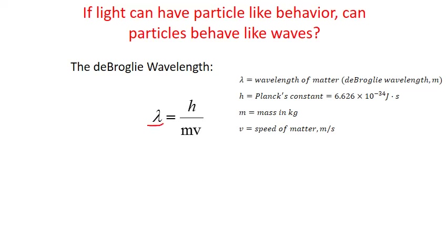The Greek symbol lambda stands for wavelength, just as it does in our light equations, and it's given in units of meters. H is Planck's constant: 6.626 times 10 to the negative 34 joules times seconds. M stands for the mass of the particle in units of kilograms. And the V term is the speed at which that particle is actually moving in units of meters per second. So the de Broglie wavelength is equal to Planck's constant divided by the mass of a particle times the speed of that particle.